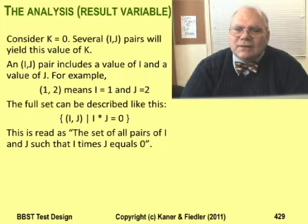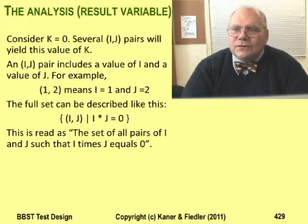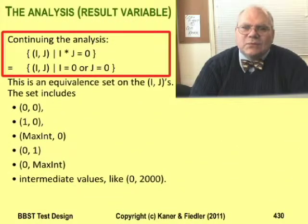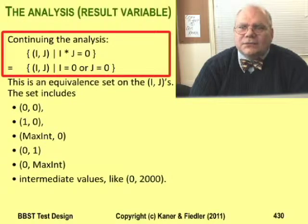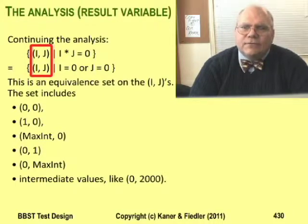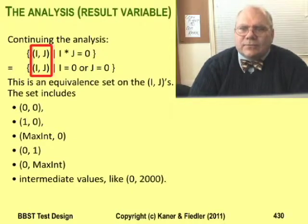Every concept I show in symbols I'm trying to explain in words. If you get confused, please post a query in the course's help forum. We're trying to decide what pairs of values of i and j to use to create a test for k equals zero. Rather than saying 'a pair of values of i and j,' I find it easier to refer to an i,j pair, shown by writing i and j with parentheses around them.